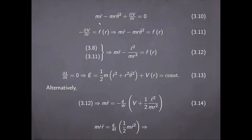Now the second Lagrange equation is going to involve the radial coordinate and, following through with the established procedure, has the expression shown here. We can write this in several equivalent ways. Using the definition of force in Newtonian mechanics, we can obtain an equivalent expression, and then using equation 3.8 — which is just the conservation of angular momentum — we can rewrite it as shown here.